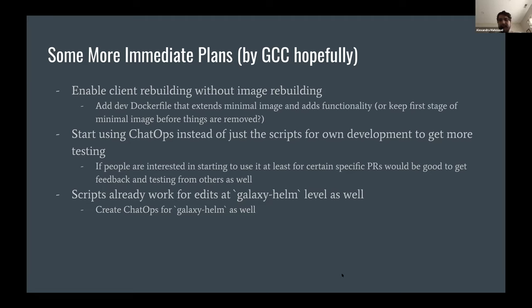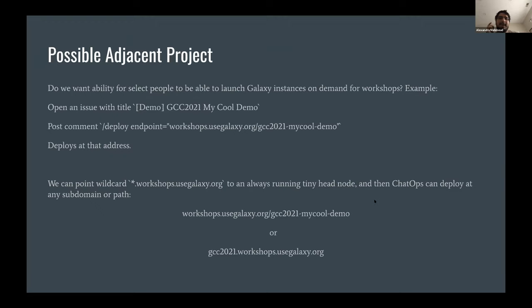I've been using scripts and command line mostly doing these things manually, but I'm going to start using chat ops myself as well for more testing. Luke and I talked yesterday about using it for developing some things. If anyone is interested in starting to use this earlier, I can either give you access to that organization I already made or help you set it up on your forks. The scripts already work on the galaxy-helm level as well - on the Galaxy side it takes galaxy-helm for granted and looks for changes in Galaxy, and on the galaxy-helm side it takes Galaxy for granted and deploys changes in galaxy-helm.